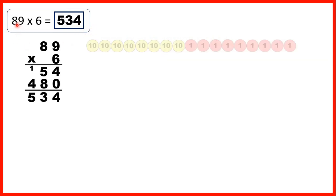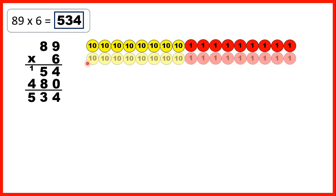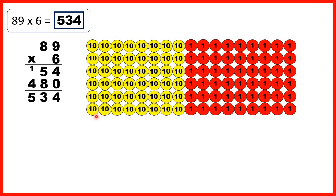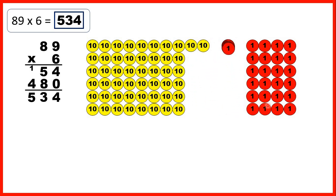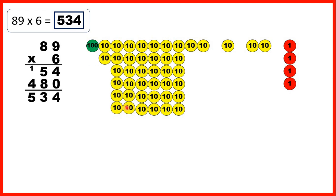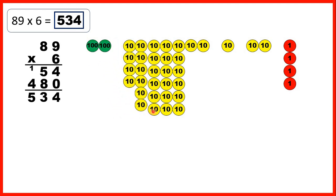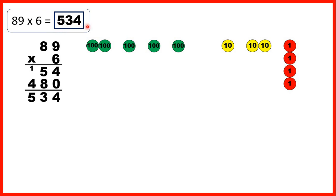Our last question was 89 — so 8 tens and 9 ones — and we were multiplying by 6. So we can show what we have six times. Now we can regroup 10 ones for 1 ten, and we can regroup 10 tens for 100. So now that we've regrouped as much as we can, we can see that we have 5 hundreds, 3 tens and 4 ones. So that's why our answer is 534.